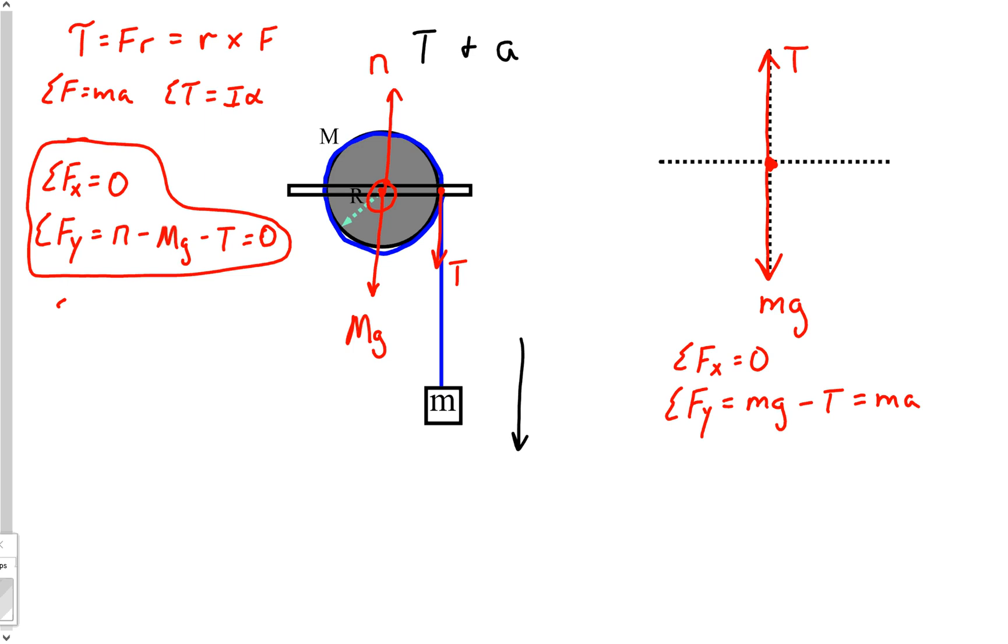So what we need to do now is a sum of the torques for this object. So sum of the torques on that object is equal to I alpha. So let's actually look at the torques. What's the only torque on that object? Well it's just that tension. So the sum of my torques is T R. There's my torque, my tension is my force, and the radius of this object is my actual r in terms of doing my torque.